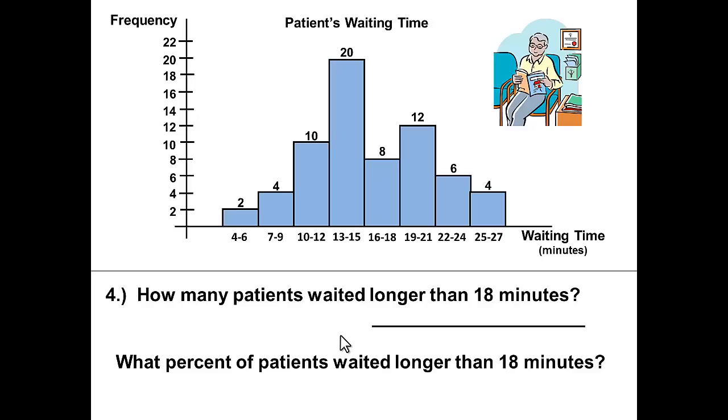How many patients waited longer than 18 minutes? Why is this question a little bit more difficult? Because longer than 18 minutes involves more than one class. As you look at your classes, which classes involve longer than 18 minutes? Well, 16 to 18 is not longer than 18 minutes. We would not include that, but we would include 19 to 21 and 22 to 24 minutes and 25 to 27 minutes. So that would be 12 plus 6 plus 4 which would give us 22.